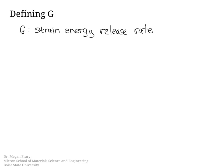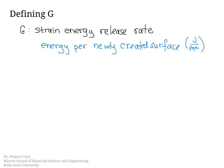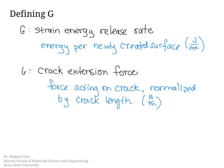G is often called the strain energy release rate — it is the energy per newly created surface as the crack grows. G is sometimes called the crack extension force, in which case it's the force acting on the crack normalized by the length of the crack. Even though these units look different, they turn out to be the same once you write joules in terms of newtons. Like fracture toughness, the strain energy release rate describes the current state of the crack in a particular material and also has a critical value at which crack growth will take off.